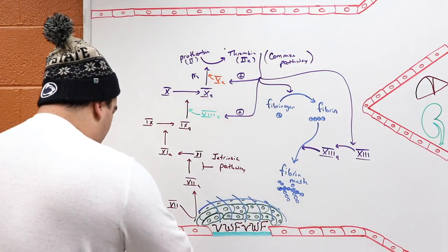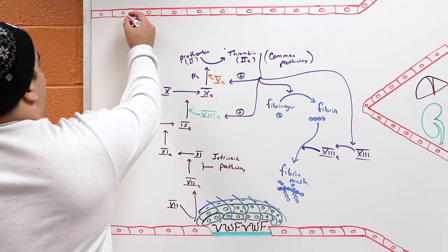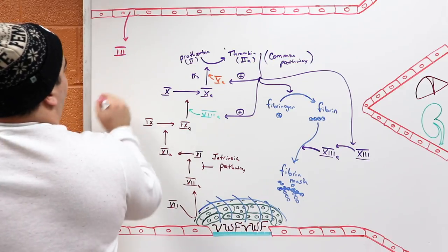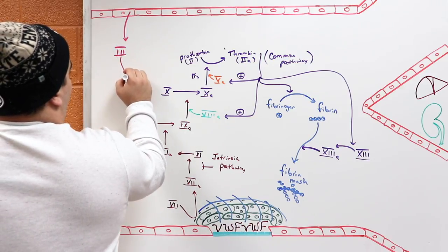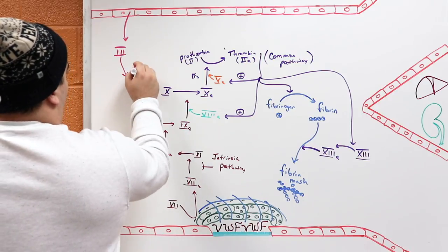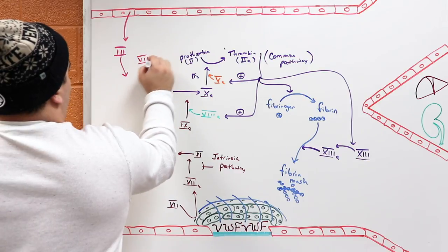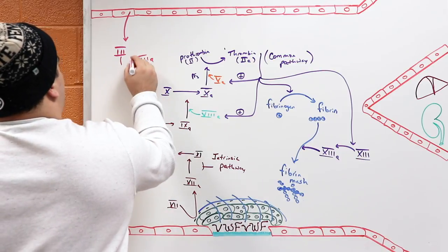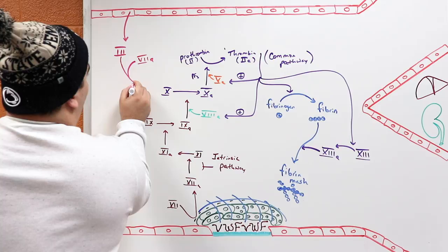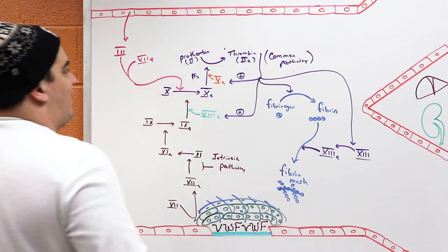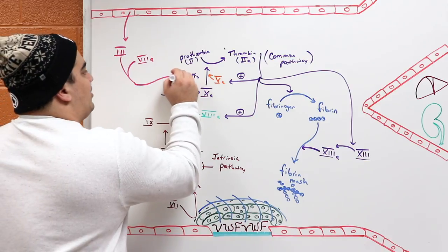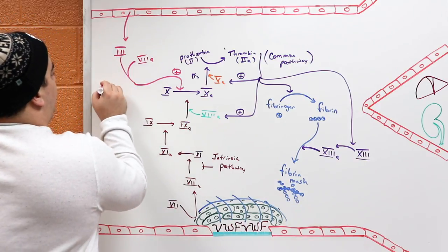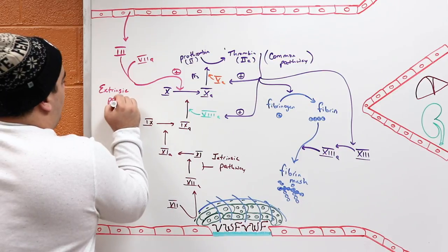There's a convergence on the common pathway. Whenever your blood vessels are injured, they make a molecule called factor 3. Factor 3 then reacts with another molecule called factor 7. When these molecules react together, they form a specific complex that is really good at stimulating factor 10. When factor 10 is stimulated, that leads to activation of thrombin and down to the fibrin mesh. This pathway is called the extrinsic pathway.